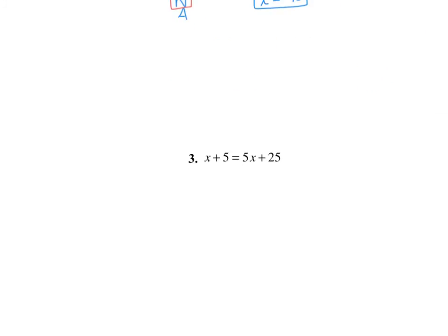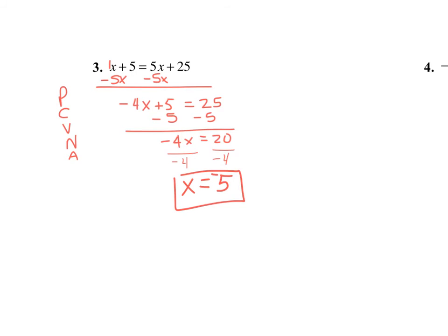Now try to do this one by yourself. I asked myself if I had parentheses — I don't. Can I combine? I can't combine a 1x and a 5, and I can't combine a 5x and a 25. Are all my variables on the left-hand side? Nope. So I subtracted 5x from both sides and ended up getting negative 4x plus 5 equals 25. Then I subtracted 5 to move my numbers to the right-hand side. My 5s cancel, leaving negative 4x equals 20. I divide by negative 4, so x equals negative 5. That's your final answer.